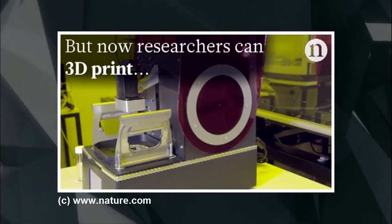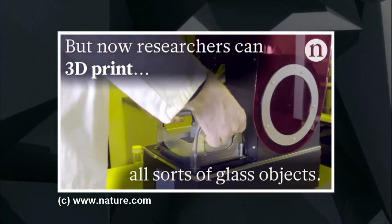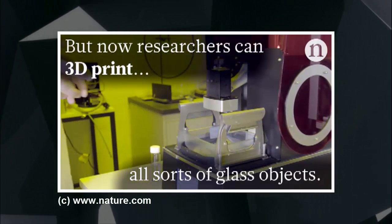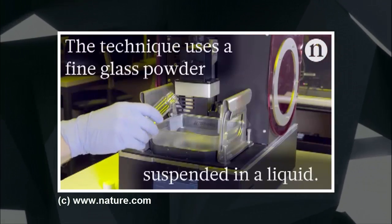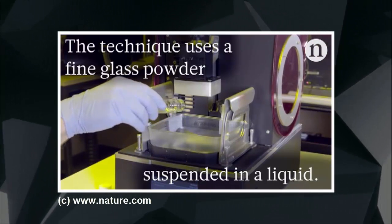Fine details are usually etched onto glass with acid, but now they can be 3D printed, creating tiny works of art. Heating the printed object in an oven to 1,300 degrees Celsius burns away any excess material.